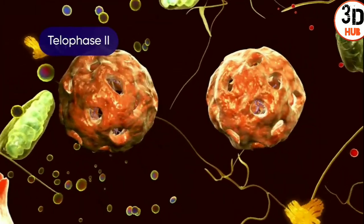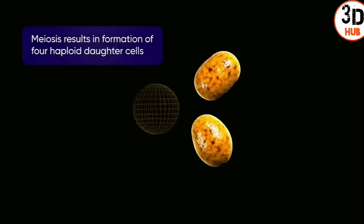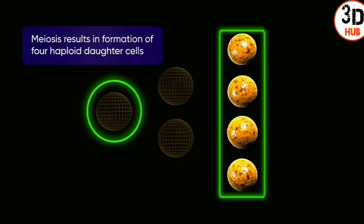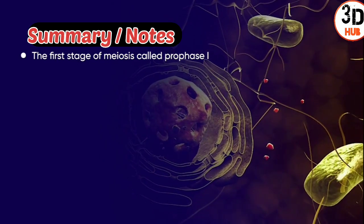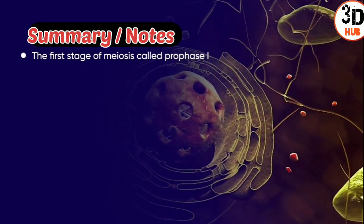After this, the process of cytokinesis begins. It is the phase when the cleavage furrow begins and gradually deepens to form four daughter cells. This marks the end of meiosis 2.